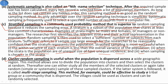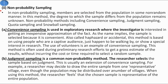Cluster random sampling is useful when the population is dispersed across a wide geographic region. This method allows one to divide the population into clusters and then select clusters at random. One can then either study all members of the selected clusters or take a random or systematic sample from the selected clusters — if the latter is followed, it is called multi-stage sampling. For example, this could be effective to study a tribal community dispersed in different geographic areas, using villages as clusters selected randomly.